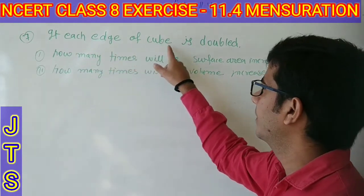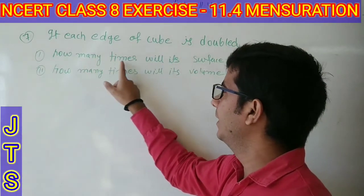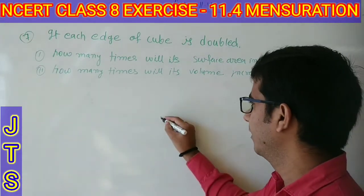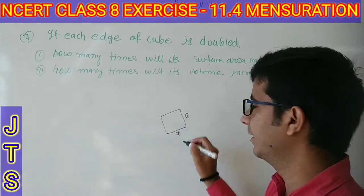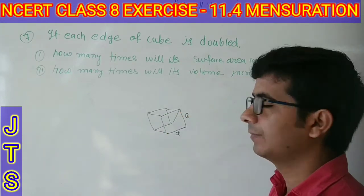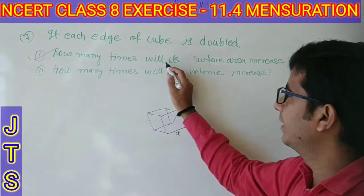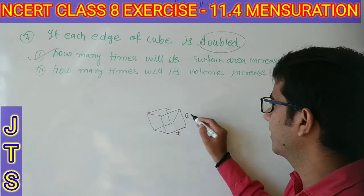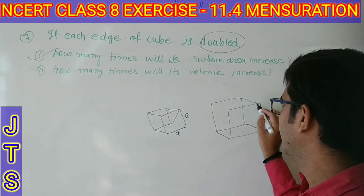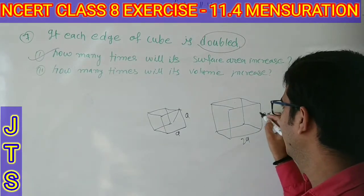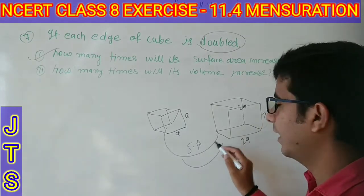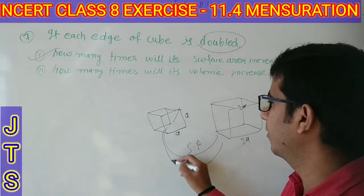Question number 7: If each edge of a cube is doubled, how many times will its surface area increase? एक cube पहले से दिया हुआ है जिसका side A है। अगर इसको double कर देते हैं तो दूसरा cube जो बनता है उसका edge 2A हो जाएगा। तो surface area कितना times increase करेगा, यह हम compare करेंगे।